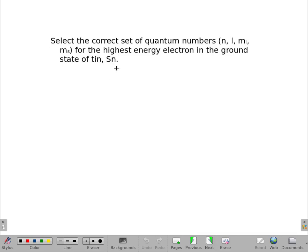To figure this out, we're going to look at the periodic table. We can see from the periodic table that tin is in the fifth row down in the p block, so its last electron goes into a 5p orbital.